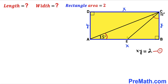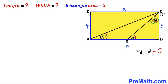Now I have connected points E and C, where point E is on line AB, such that angle BEC is 30 degrees and angle BCE is 60 degrees. We can observe that the whole angle ACB is 75 degrees, angle BCE is 60 degrees, so the remaining angle ACE has got to be 15 degrees.